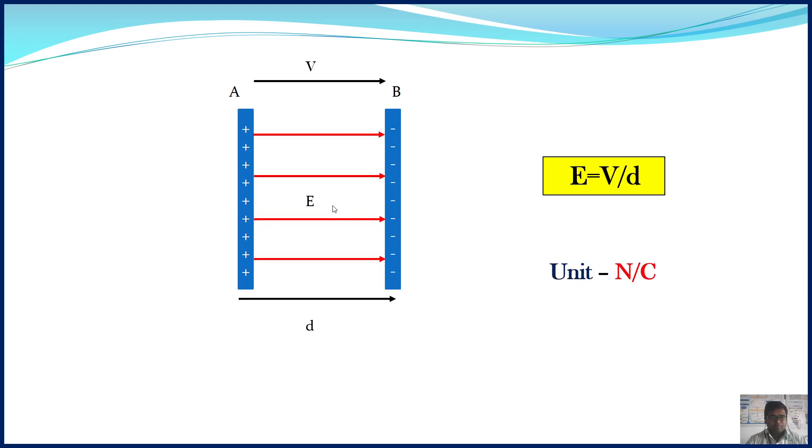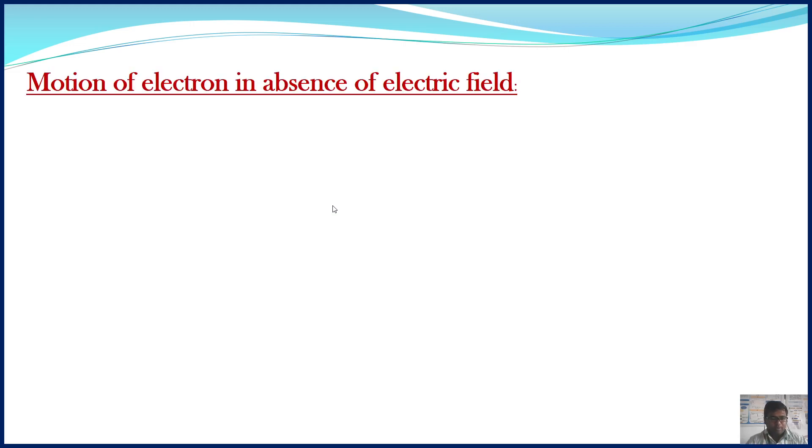Now, let us consider the motion of an electron in the absence of an electric field. This is a basic case. Consider an electron moving through a region where the electric field is zero. For that, consider two metal plates with no battery connected to these plates.